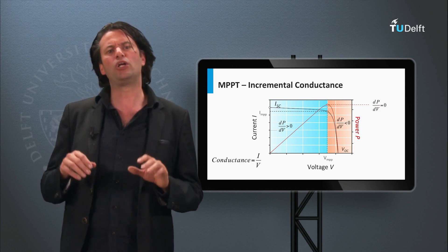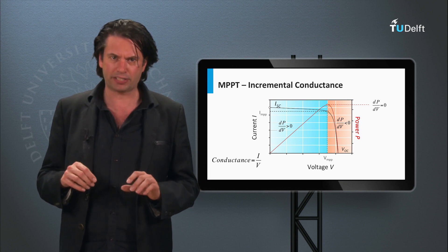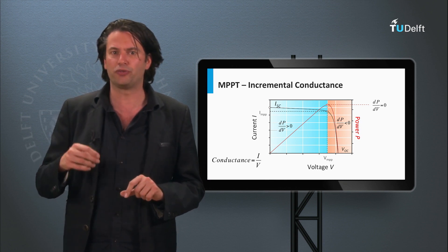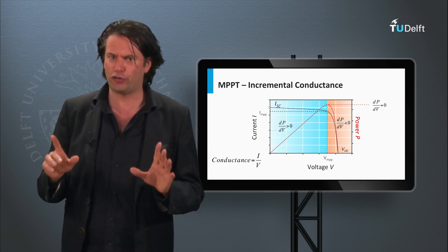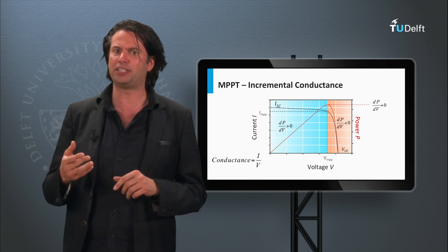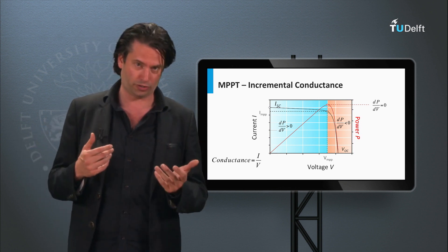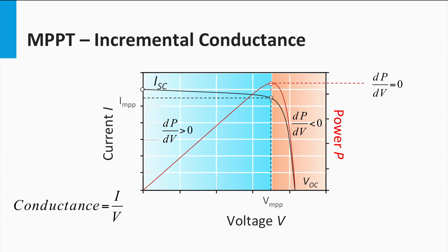Next, we look at another kind of direct MPP tracking algorithm called the incremental conductance method. To better understand the algorithm, we shall first arrive at the relation between conductance and incremental conductance. Conductance of an electrical component is nothing but the ratio of current to voltage, or in other words, the reciprocal of resistance. We know that at the maximum power point, the slope of the PV curve is zero, i.e., dP/dV = 0.